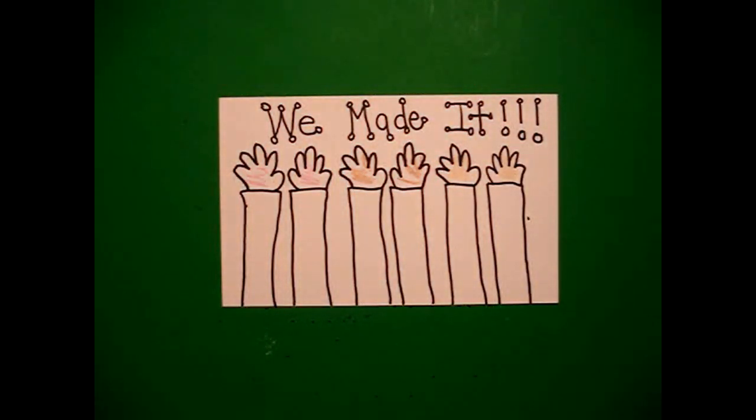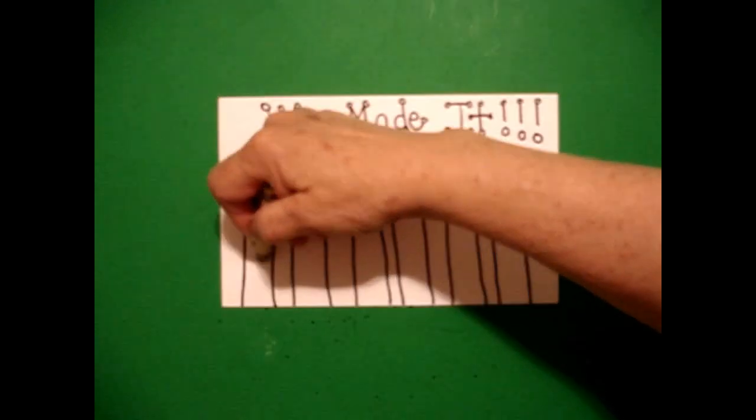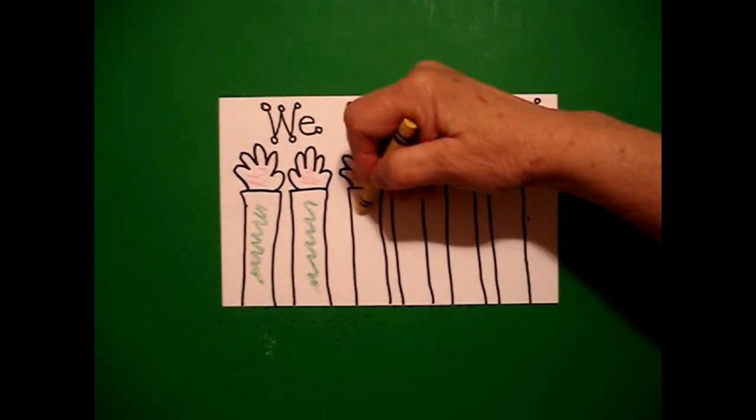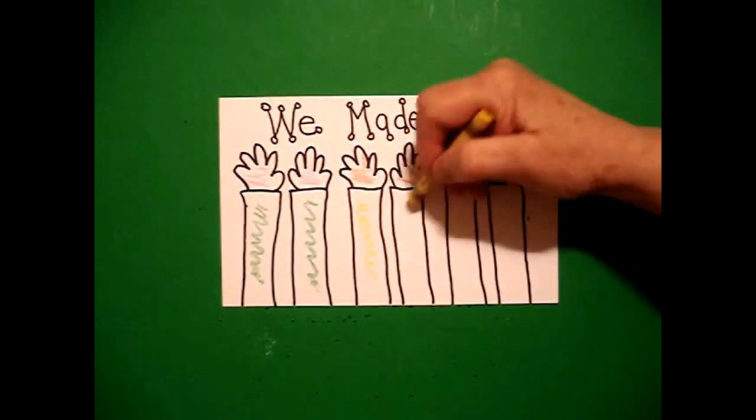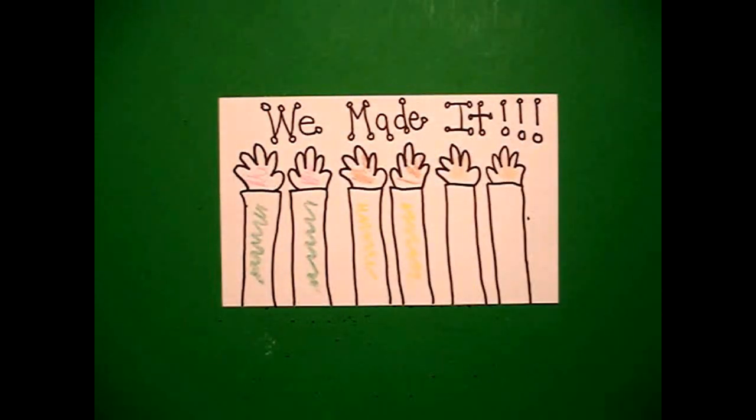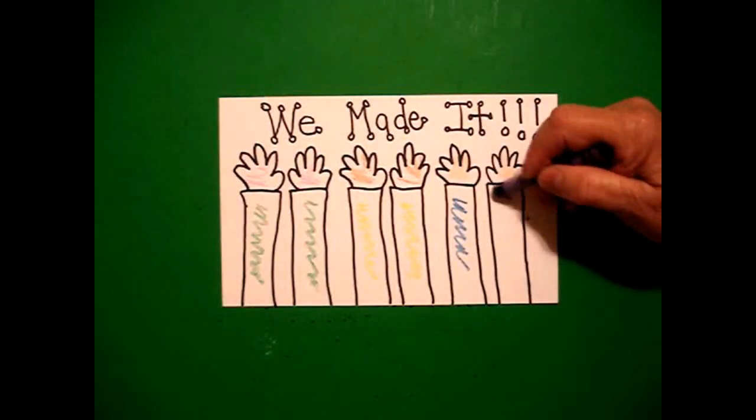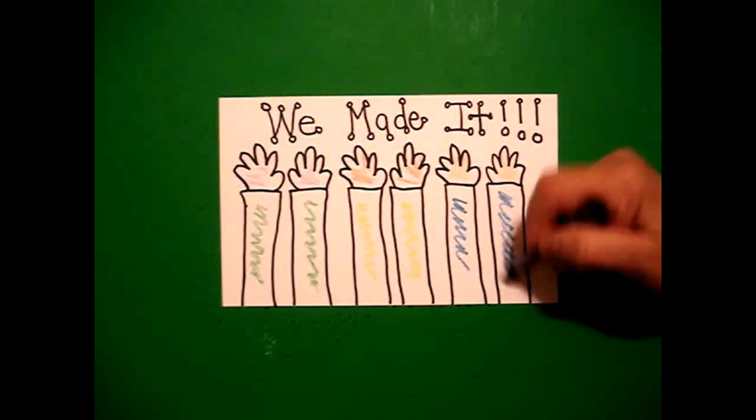Now, for my arms, this set of arms are going to be green. This set of arms is going to be yellow. And this set of arms is going to be blue. You may do your pairs of arms any colors you want.